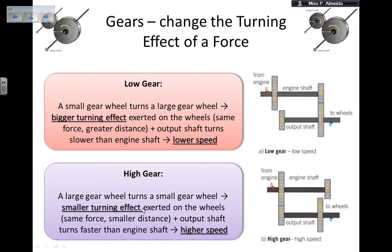So you get a smaller turning effect because you have the same force but a smaller distance. Remember, the turning effect of a force, a moment, is the force times the distance from the pivot. So you also get the output shaft that turns faster than the engine shaft, so you get a higher speed.